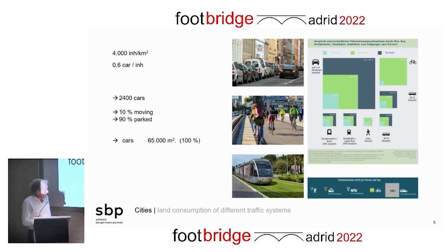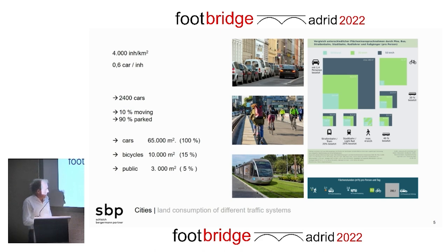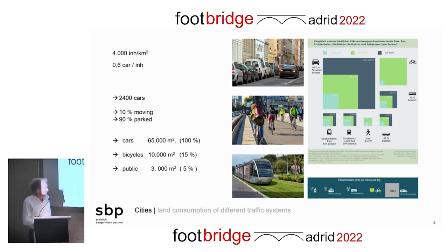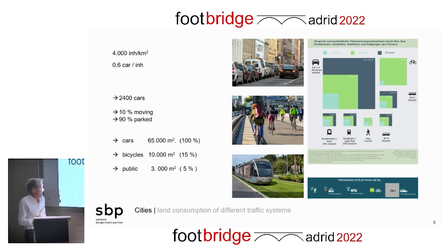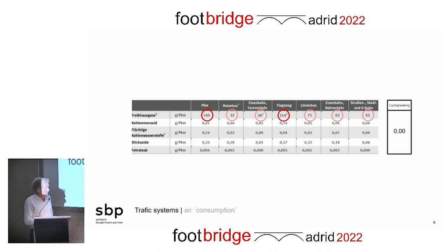If 10% of cars are moving and 10% are parking, we end up with an area of 65,000 square meters — about 7% of one square kilometer. For bicycles, with 10% moving and 9 parked, we end up at 10,000 square meters, and for public transport at 3,000. If we remember 40 square meters per person and we double the inhabitants, the difference between bicycles and cars — about 55,000 square meters — means we could house 1,000 more inhabitants at one story, or 3,000–4,000 more at two or three stories. That gives a rough idea of what happens if cars disappear from cities, which I'm sure will happen.